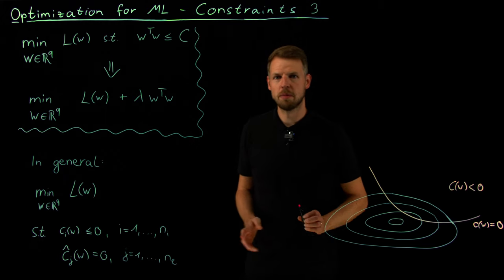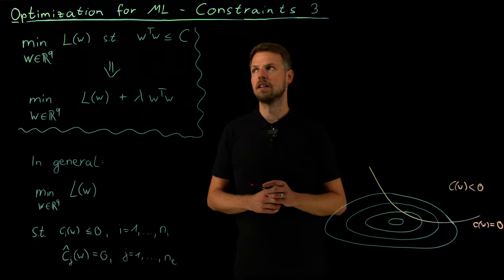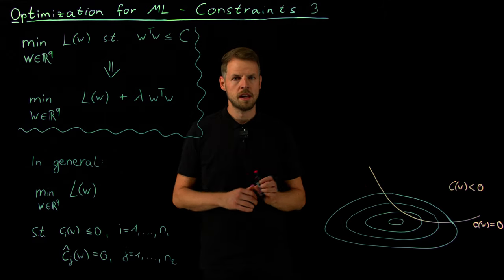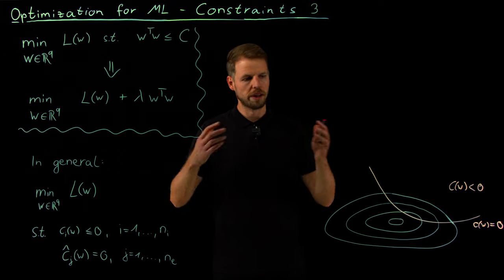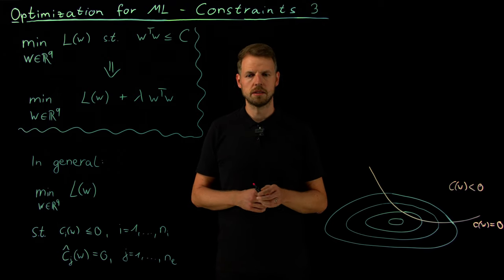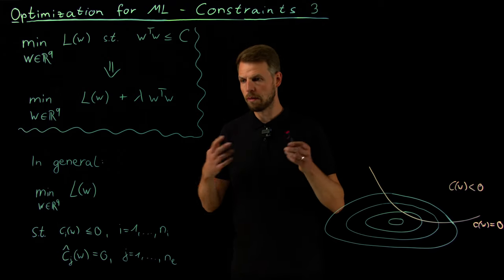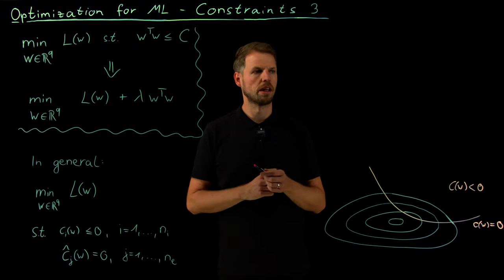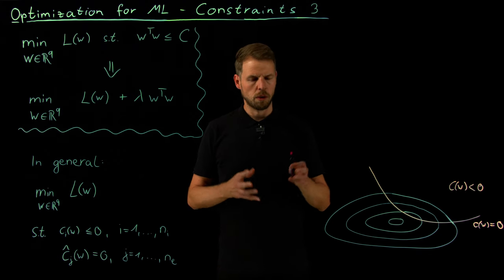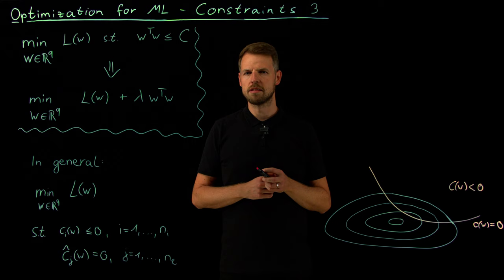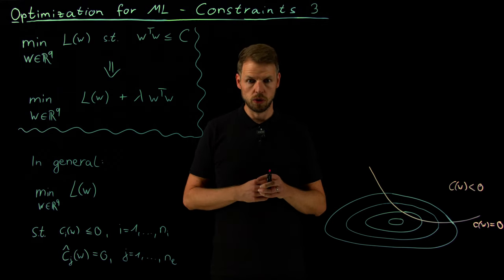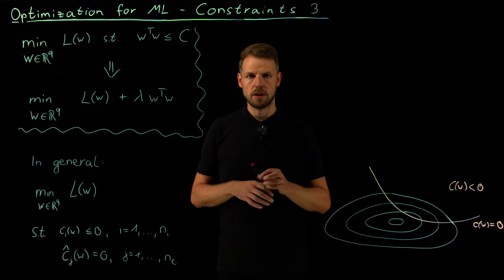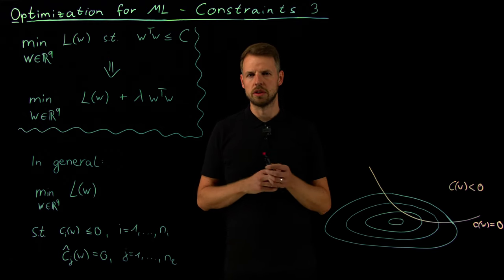Hi everyone and welcome back to part three on constraints in optimization for machine learning. What we have discussed until now is the idea of why do we need constraints? Many reasons, like numerical reasons. We have seen the ridge regression in the last video. We might want to include physics constraints and so on. And then we have seen actually that it's not so easy to use the gradient as we know it, but you have to derive an additional condition.